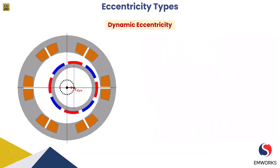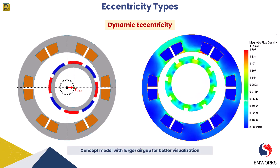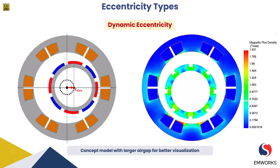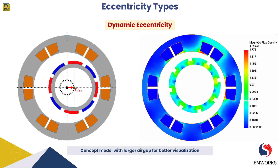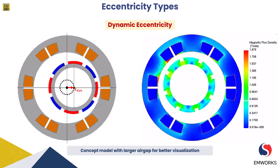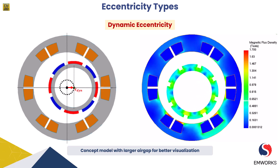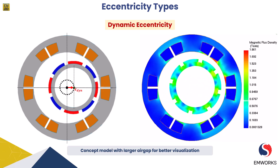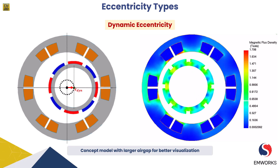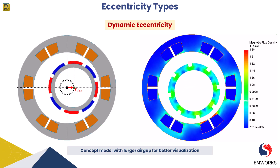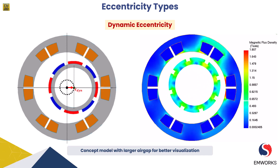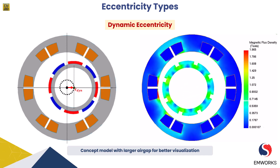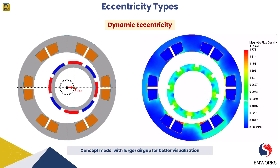Dynamic eccentricity involves a varying displacement between the rotor and stator centers as the motor rotates. It may be caused by factors such as bearing wear, shaft deflection or uneven magnetic pull. As the rotor eccentricity changes during rotation, it introduces periodic variations in the air gap, resulting in additional vibration, noise and potential performance issues.